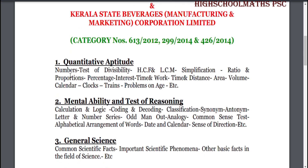First part: Quantitative Aptitude. Topics include numbers, test of divisibility, HCF and LCM, simplification, ratio and proportions, percentage, interest, time and work, time and distance, area, volume, calendar, clocks, trains, and problems on age etc.